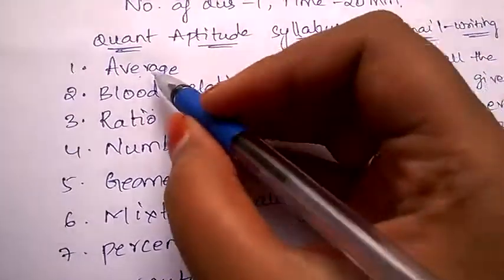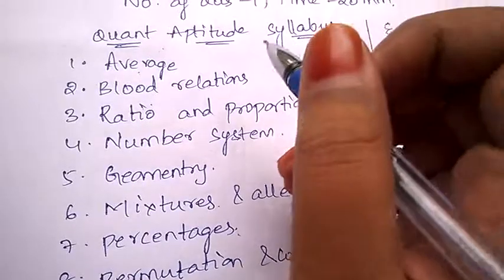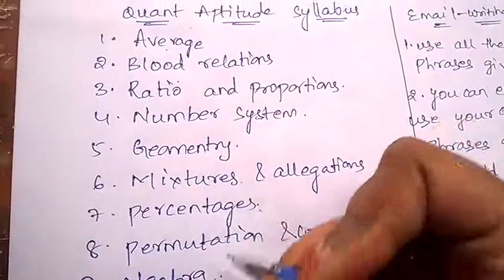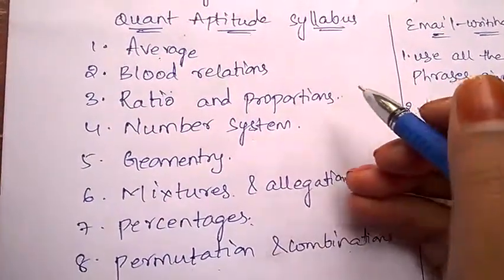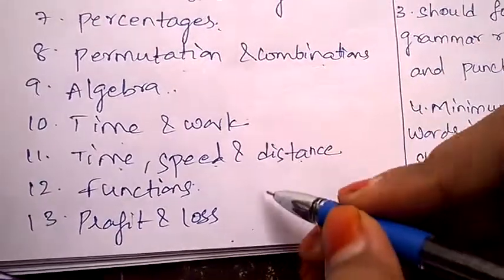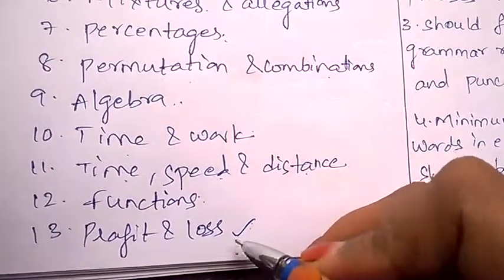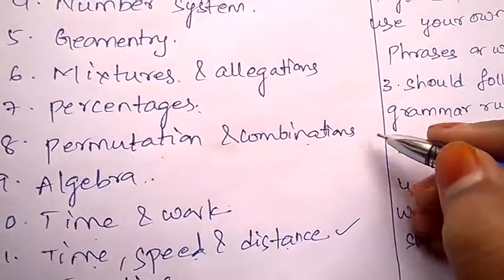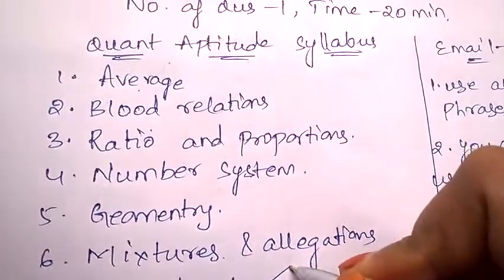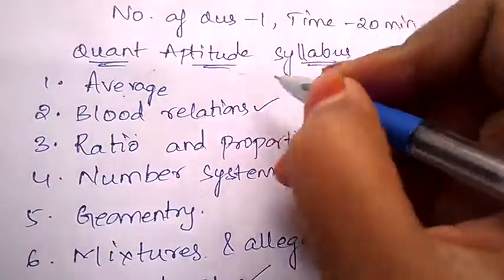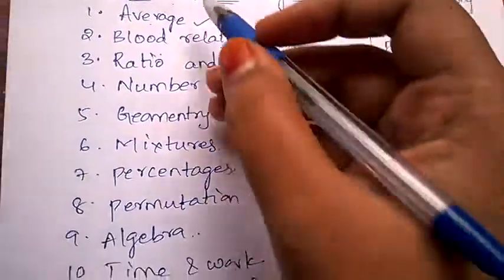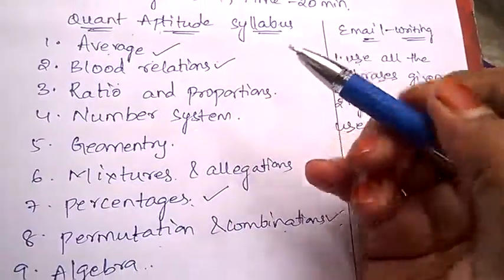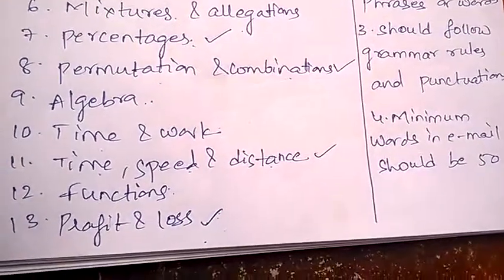Now I'll tell you the most important topics in these 13. First, most important topic is profit and loss. Give more weightage to profit and loss, time speed and distance, permutation and combination, percentages, blood relations, and average. All 13 topics are very important, but give more weightage to these.